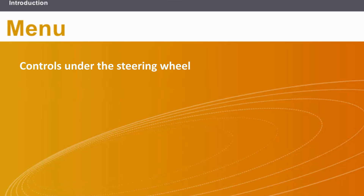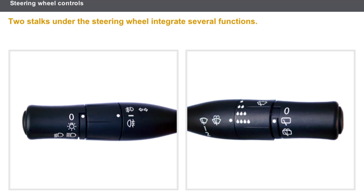This lesson will cover the following topics: controls under the steering wheel. Let's now look at the controls located under the steering wheel. The steering wheel controls combine several switches, and two stalks under the steering wheel integrate several functions.